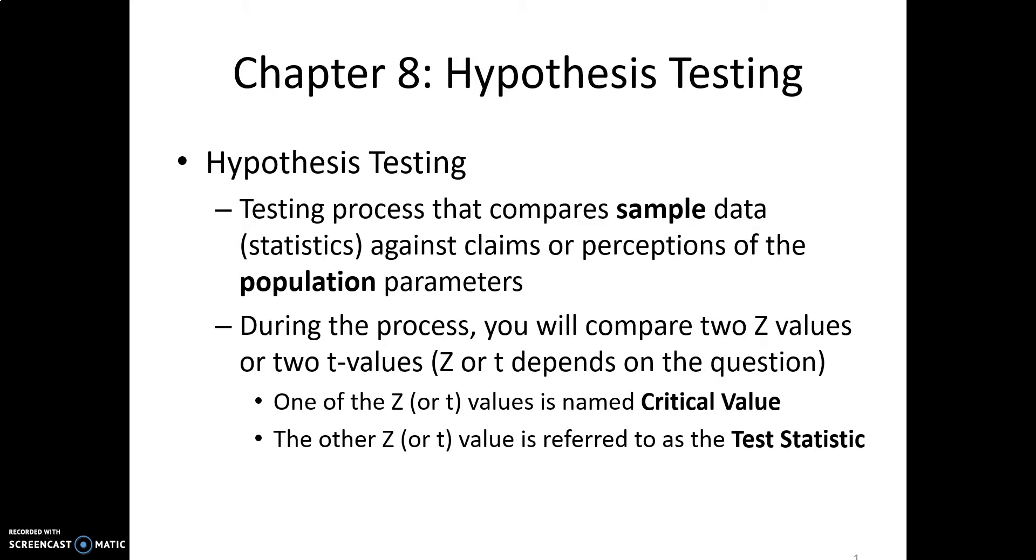Because we have two Z values or two T values, we need to differentiate the names. One of the Z values or T values is going to be called a critical value. That's like a threshold value. The other Z value or T value is referred to as the test statistic. That's the value that we are going to measure and calculate.